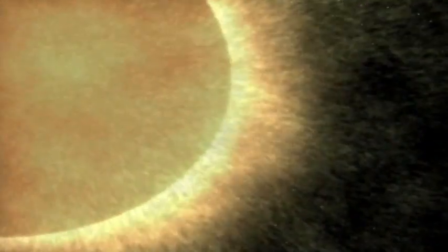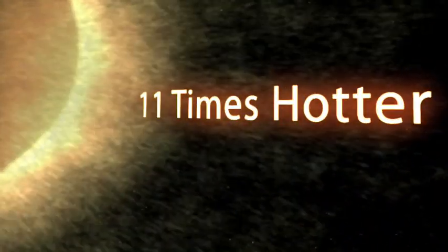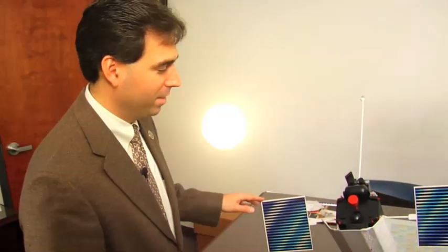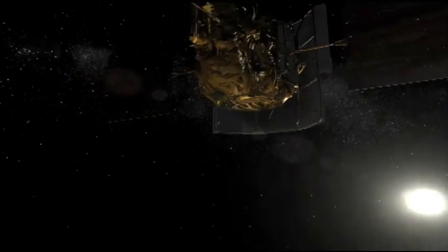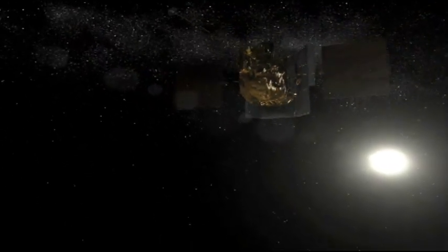When you're at Mercury, you feel the sun about 11 times hotter than you would here at the Earth, so just to give a feeling of being out on the beach, it would be 11 times hotter than that. It's very, very intense. Being that close to the sun is good and bad. Good for solar power, but bad for the spacecraft because it is so hot.